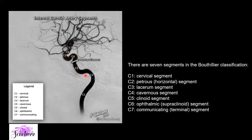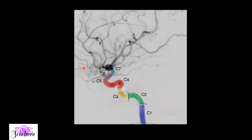The petrous, lacerum, and cavernous segments are often grouped together and called petrocavernous for general reporting purposes. Most of the time you might find irregular narrowing related to atherosclerosis in these patients.